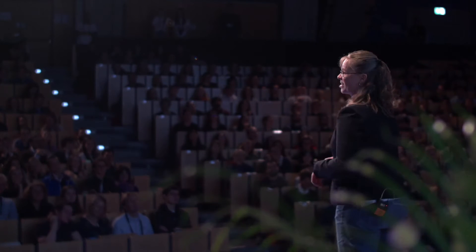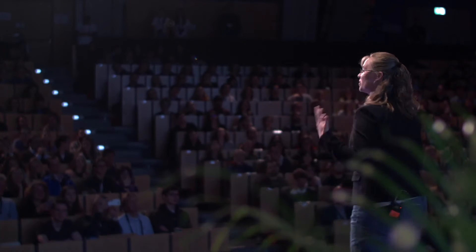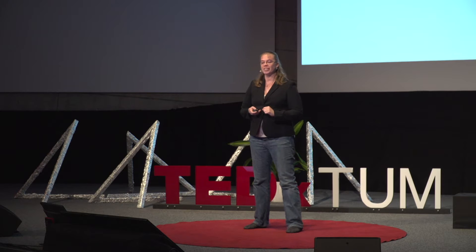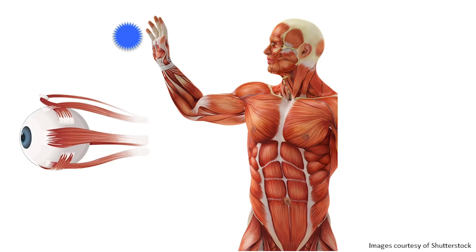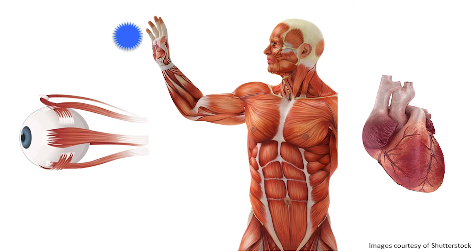Our bodies have more than 650 different muscles. They are located in different positions, and they have different functions. To catch the ball, you had to use muscles in your arms as well as in your hand. Everyone was able to track where those balls were going because muscles control where your eye moves and what you can see. And the whole while, your heart was pumping, keeping you alive. So our bodies have multiple different kinds of muscles that contract in different ways and that have different functions.